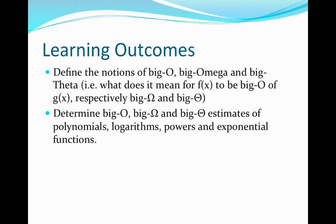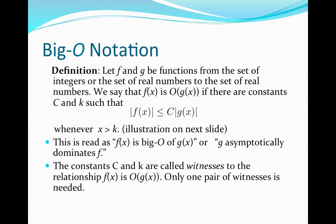Okay, so let's begin with the definition of big O notation. So we know that it's a property on functions, so let's let f and g be functions from the set of integers or the set of real numbers to the set of real numbers. We say that a function f of x is big O of g of x if there are constants c and k such that the absolute value of f of x is less than or equal to c times the absolute value of g of x whenever x is bigger than k.